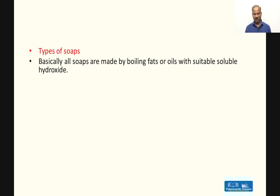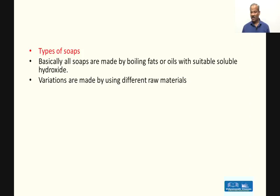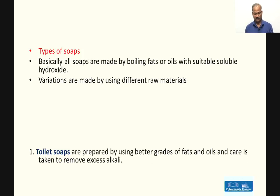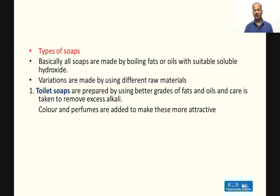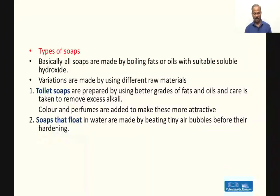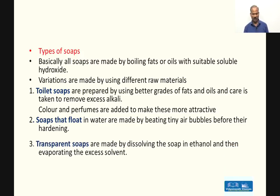Types of soaps: all soaps are made by boiling fats or oils with suitable soluble hydroxides, with variations made by using different raw materials. The first category is toilet soaps — prepared using better grades of fats and oils, with care taken to remove excess alkali since it is corrosive. Colour and perfumes are also added. Soaps that float are made by beating tiny air bubbles into them before hardening.